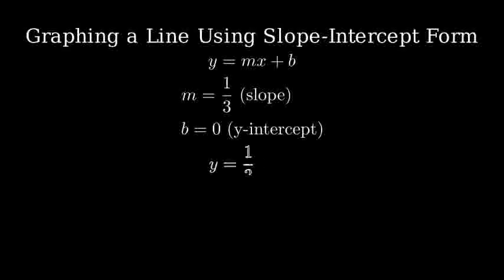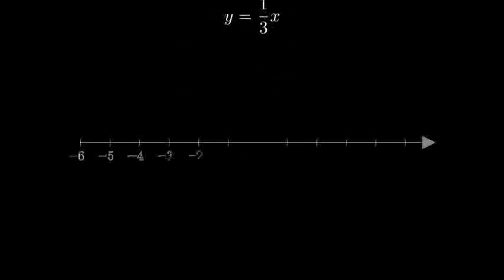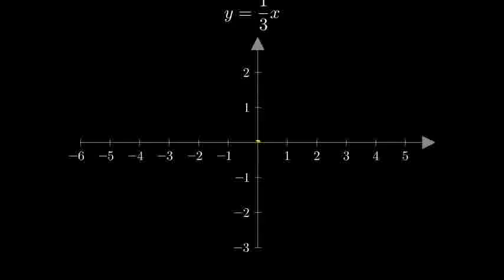Now let's create our coordinate system and graph this line. Here's our x and y-axis. We know our y-intercept is at the origin point zero zero, and our slope tells us that for every three units we move right, we go up one unit.